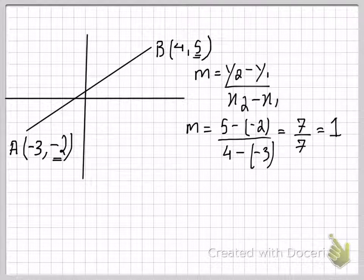Now what does this mean? This basically means that for every one unit increase in x, the line rises by one unit. Let's write it down.